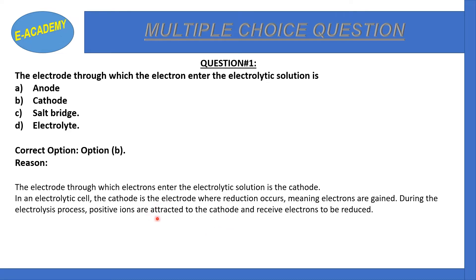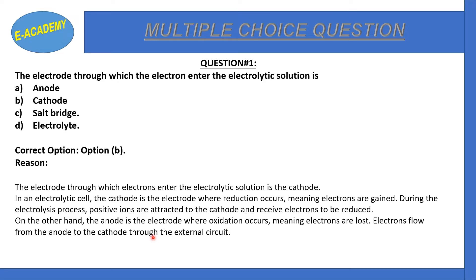Reduction means electrons are gained. During the electrolysis process, positive ions are attracted to the cathode and receive electrons to be reduced. On the other hand, the anode is the electrode where oxidation occurs — it is the electrode that loses electrons. Electrons flow from the anode to the cathode during electrolysis through the external circuit.